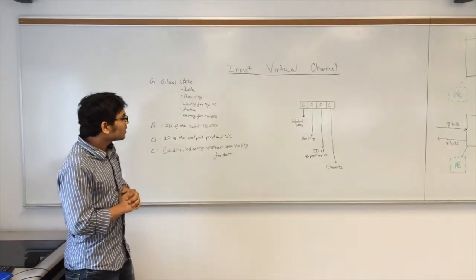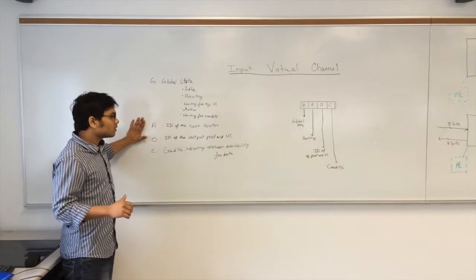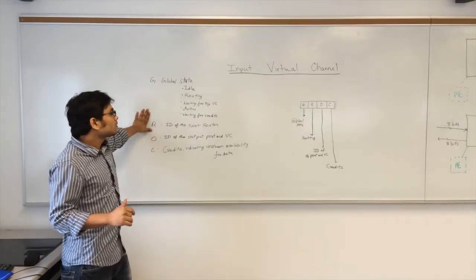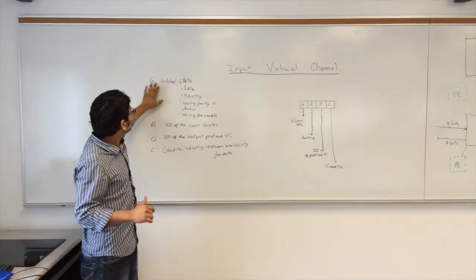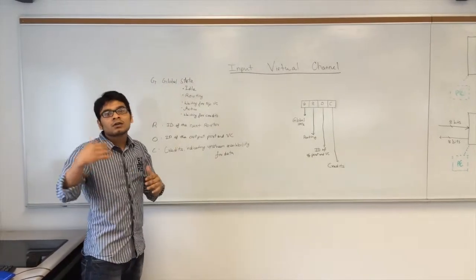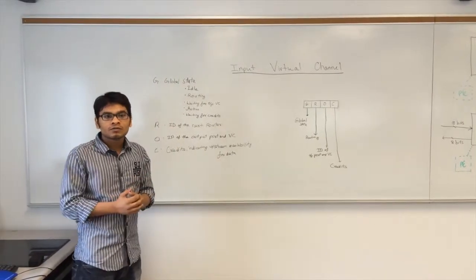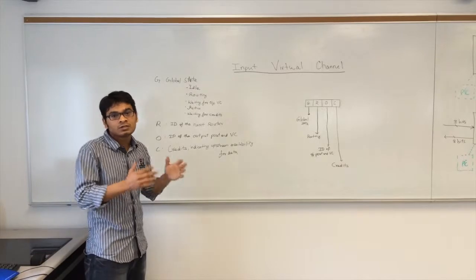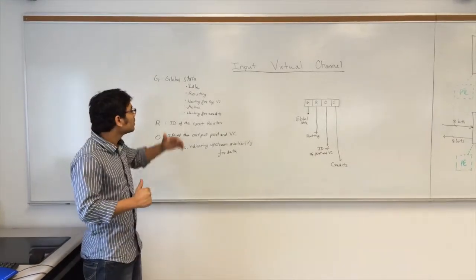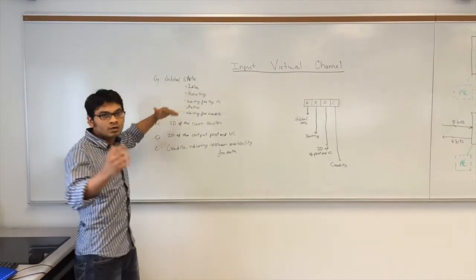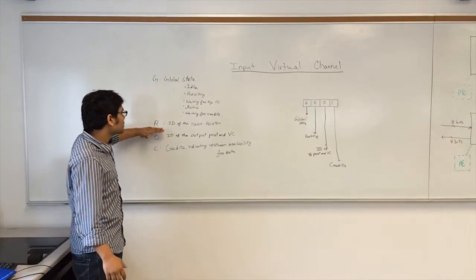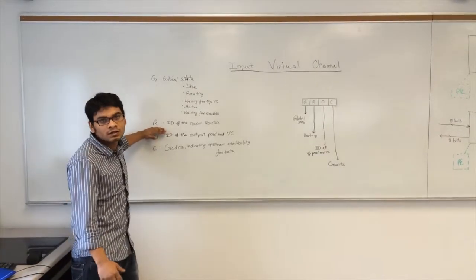Coming to the other fields — that is the routing field — when the global state field is in routing, it has asked the routing computation unit for the ID of the next router to which this packet needs to be forwarded, and when it gets that information, it stores it in this particular field of the state register.